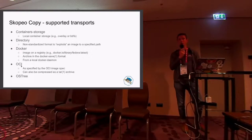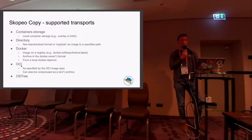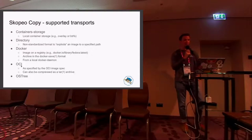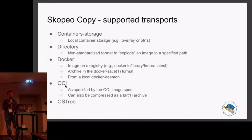The currently supported transports are: container storage — where Podman pull or Buildah pull will by default place images, with supported drivers like overlay, ButterFS, and VFS; directory — exploding the image to the local filesystem in a non-standardized but useful format; Docker — which supports the Docker save format, archive, and copying from a local Docker daemon; and OCI and OSTree. Some users store images on USB storage, copy in an air-gapped environment, and then copy back into a registry.